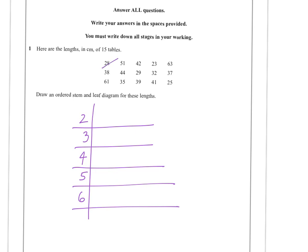Then we can take some of these off here. So we've got 28, 51, 42, 23 and 63 and so on.